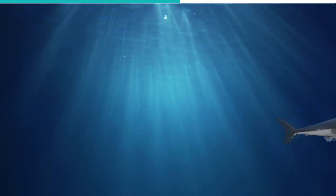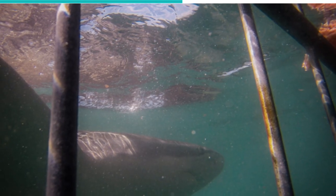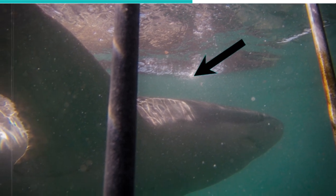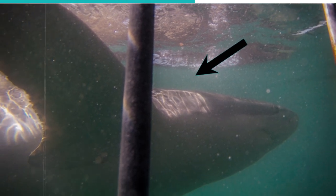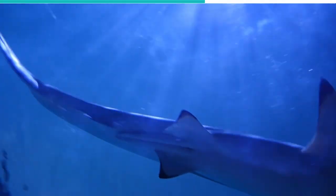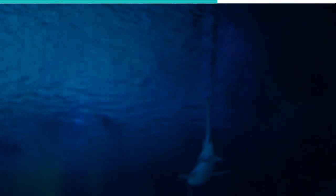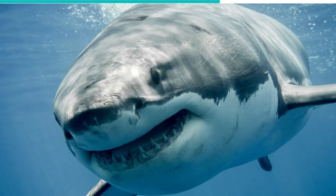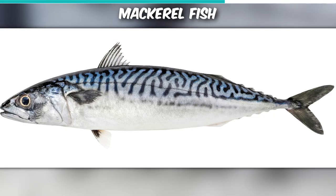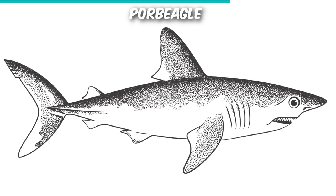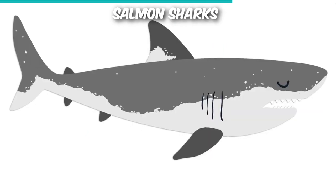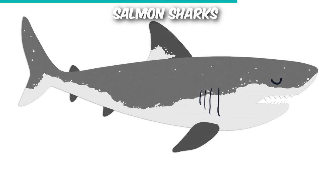Great White Sharks also belong to the family Lamnidae. Though Lamnidae was once a large family, there are only five known species left. The family Lamnidae is known for members with large size, pointed snouts, large gill openings, and spindle-shaped bodies. Other than Great White Sharks, mackerel, mako sharks, porbeagle, and salmon sharks are also found within this family.